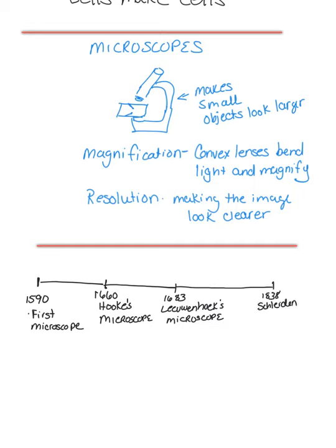I meant to say 1838, not 1883. And then in 1855, we had Virchow's discovery that all cells come from cells. So that's the timeline, and that's all for these notes.